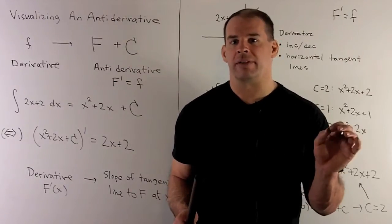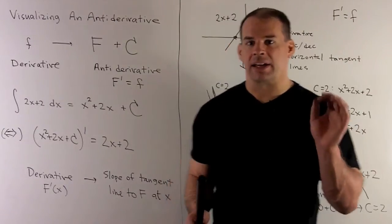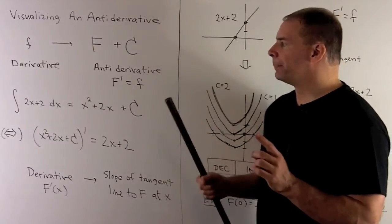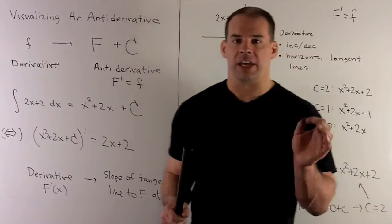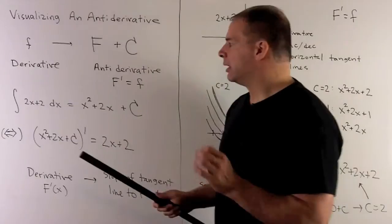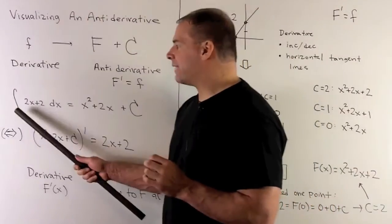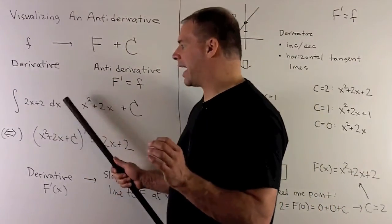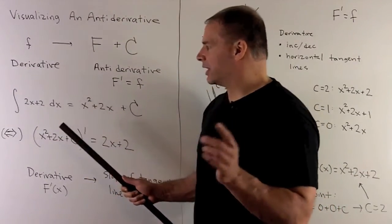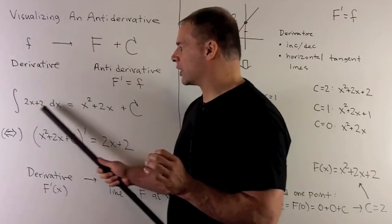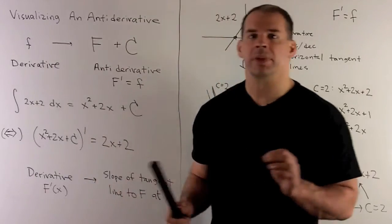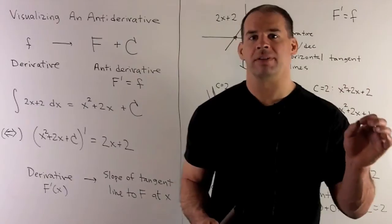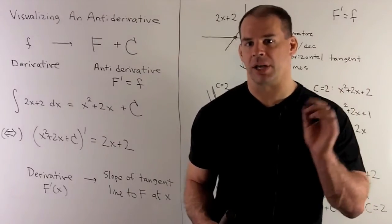We get all other antiderivatives by adding a constant. As an example, we're going to take the indefinite integral of 2x plus 2 with respect to x. This is saying: if I give you the function 2x plus 2, find me a function such that if I take its derivative, I get 2x plus 2.